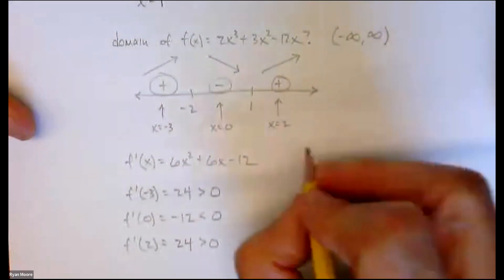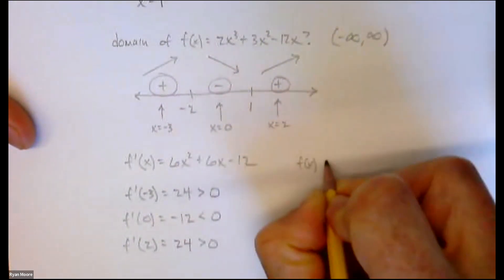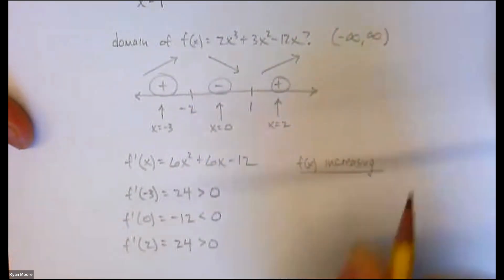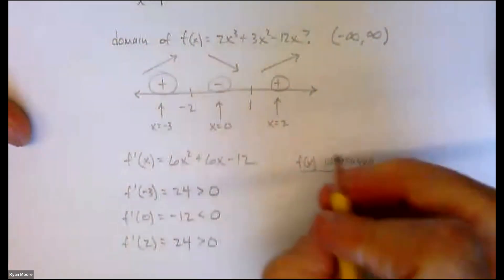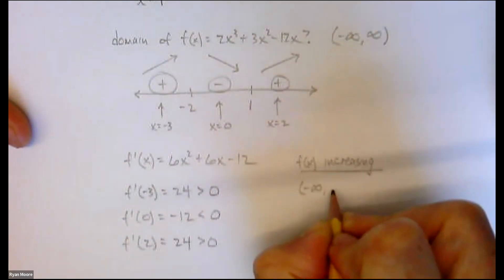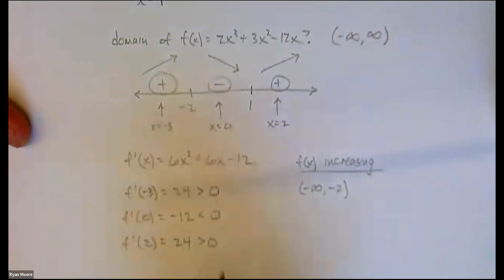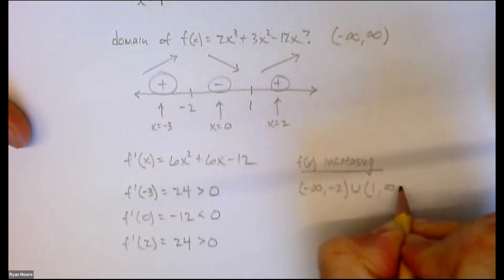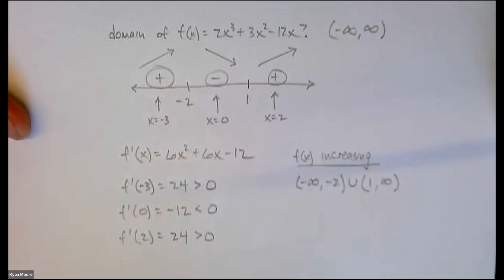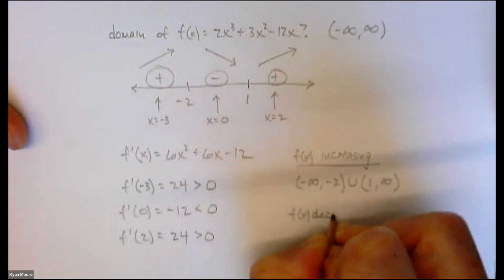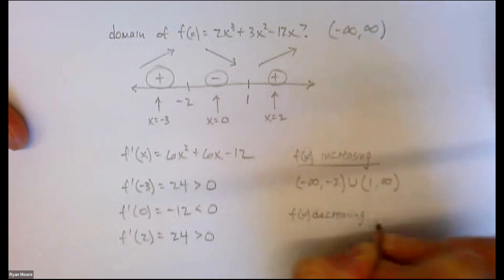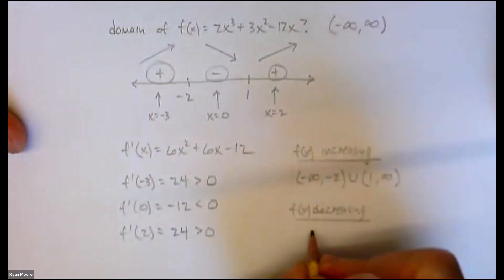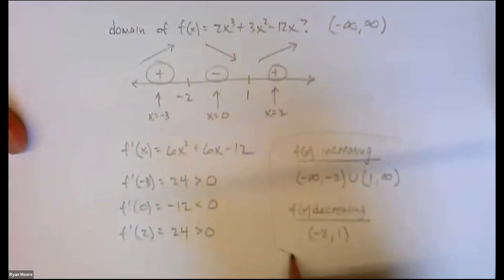So our conclusion: f(x) is increasing on (−∞, −2) ∪ (1, ∞), and f(x) is decreasing on (−2, 1).